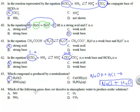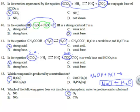Which of the following gases does not dissolve in atmospheric water to produce acidic solutions: NO, NO2, O2, or CO2? The answer is O2 — oxygen gas does not dissolve in atmospheric water to produce acidic solutions. All the other gases (NO, NO2, CO2) will produce various forms of oxy acids.